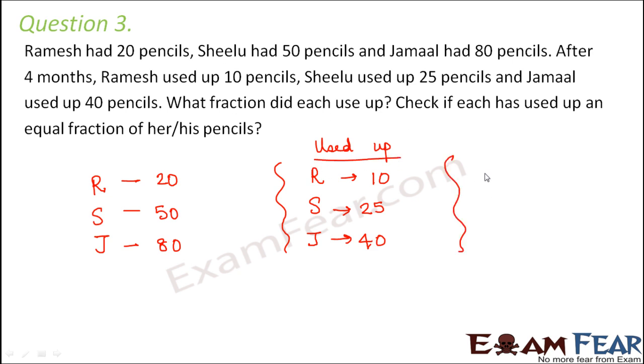Now if you talk about the fraction of pencils which Ramesh used up, he used up 10 pencils out of 20 pencils. So 10 divided by 20. So if you try to convert it into its simplest form, you would get 1 by 2. Now I am not doing the entire process again. You can do that. Find the HCF of 10 and 20, divide the numerator and denominator by the HCF, you will get 1 by 2.